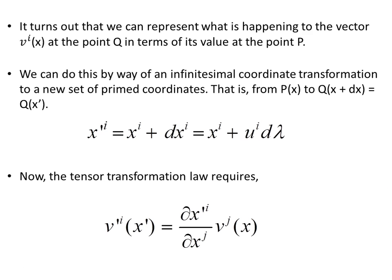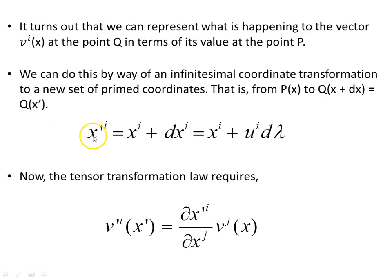It turns out we can represent what is happening to the vector v at point q in terms of its value at point p. We can do this with an infinitesimal coordinate transformation, going from point p to point q — from x to x plus dx — calling x plus dx as x prime. We can write this last bit as x plus u, the tangent vector, times d lambda, because u equals dx d lambda times d lambda, which just gives us dx.